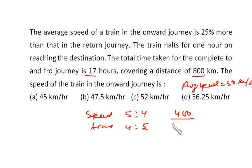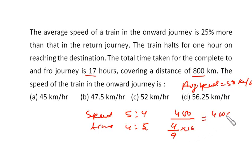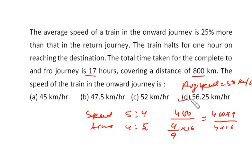So it is 4 by 9 of 16. The onward speed is 400 multiplied by 9, divided by 4 multiplied by 16, which gives 56.25 km per hour. I hope you are clear.